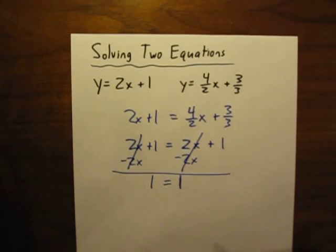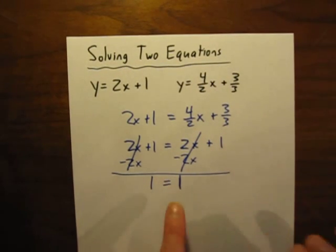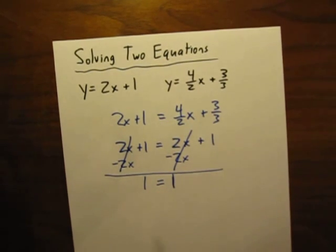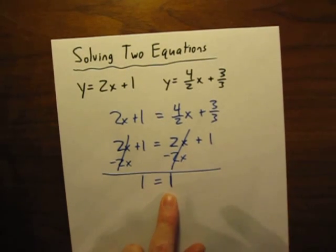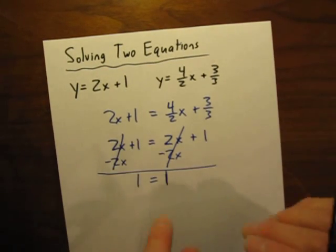And in this case here, 1, of course, does equal 1. And so, that's a red flag. That's not a normal solution here. Normally we end up with something like x equals 5, or x equals negative 10. 1 equals 1 is kind of a strange conclusion here to reach when you have these two equations.